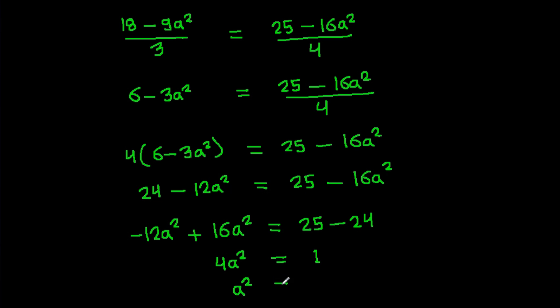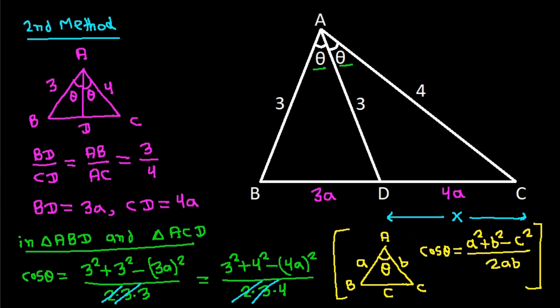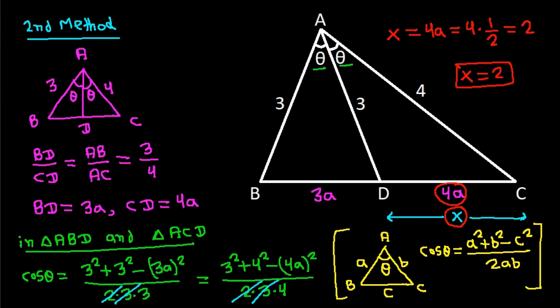So a² over 4 equals 1 over 4, that means a equals 1 over 2. And we have X is 4a, so X equals 4 times 1 over 2. So X equals 2.